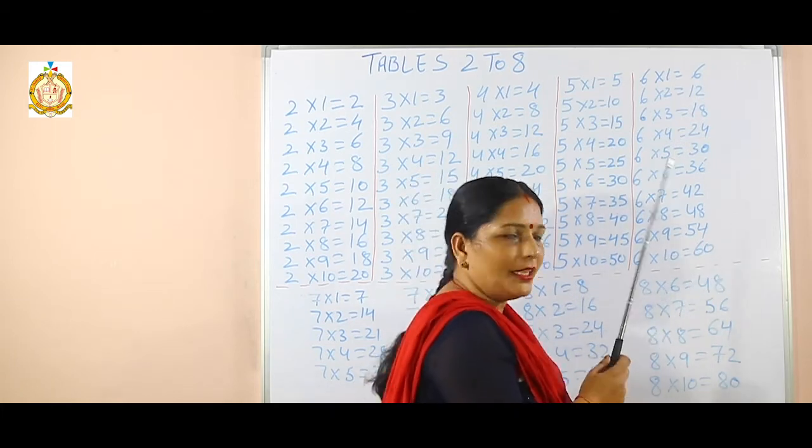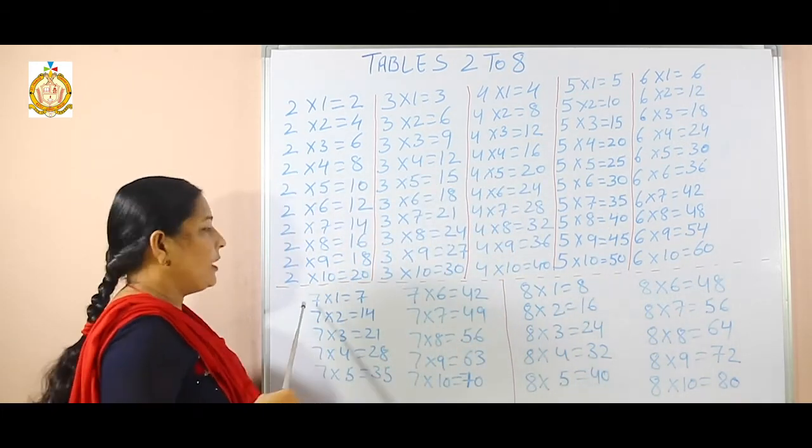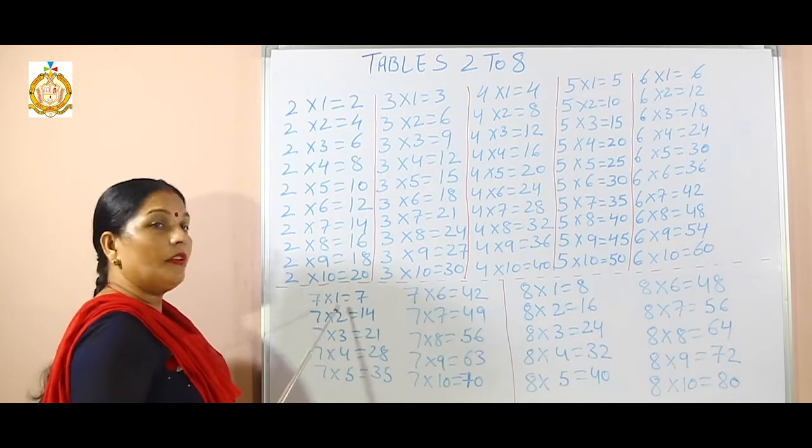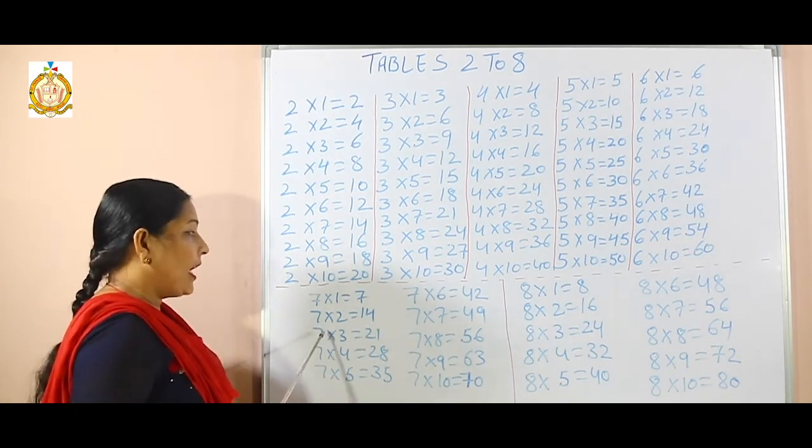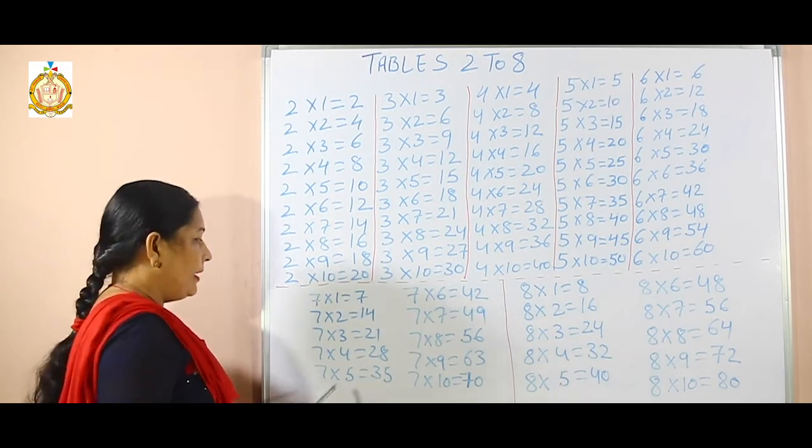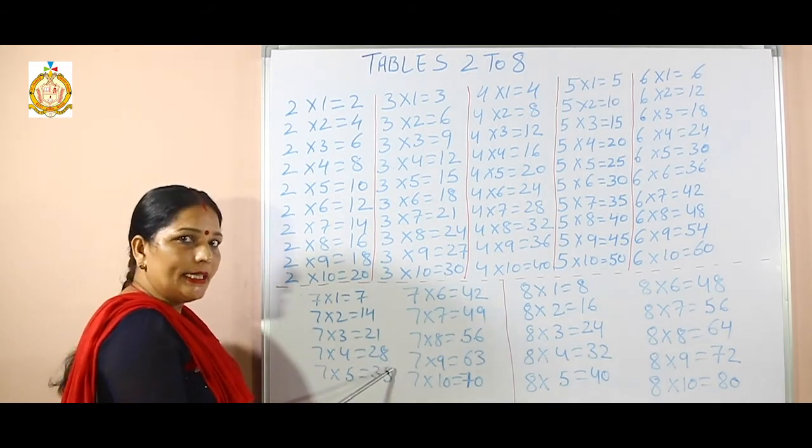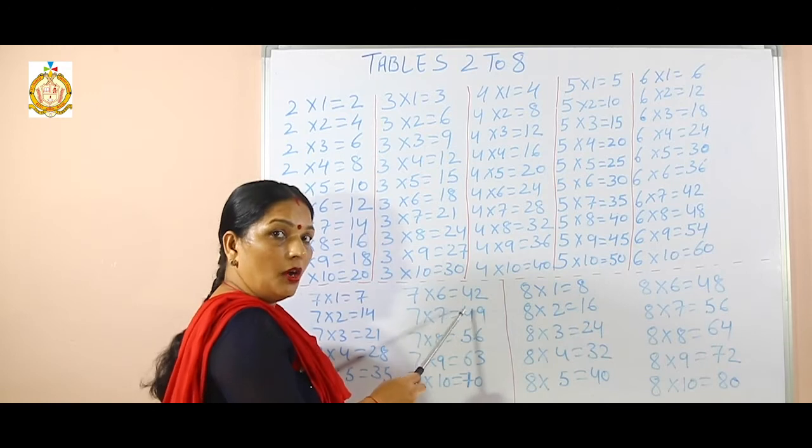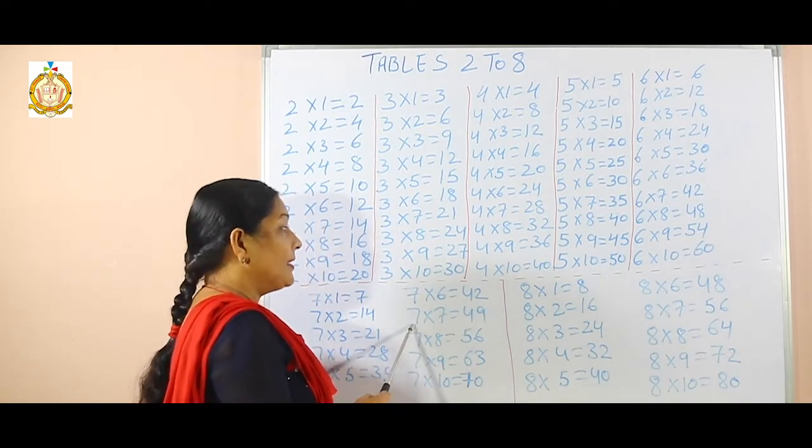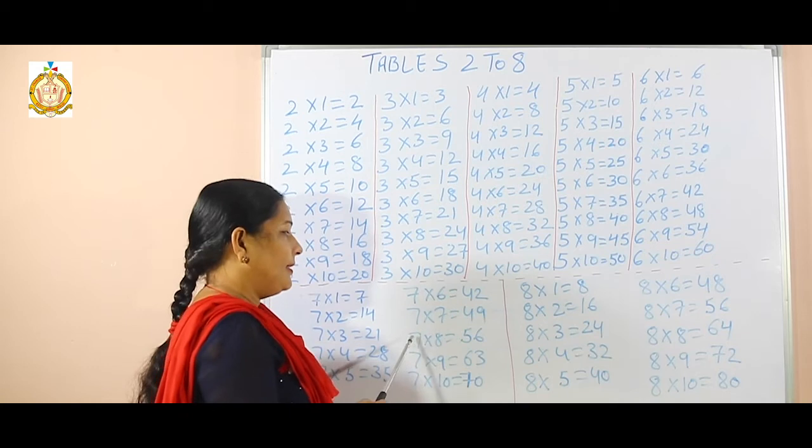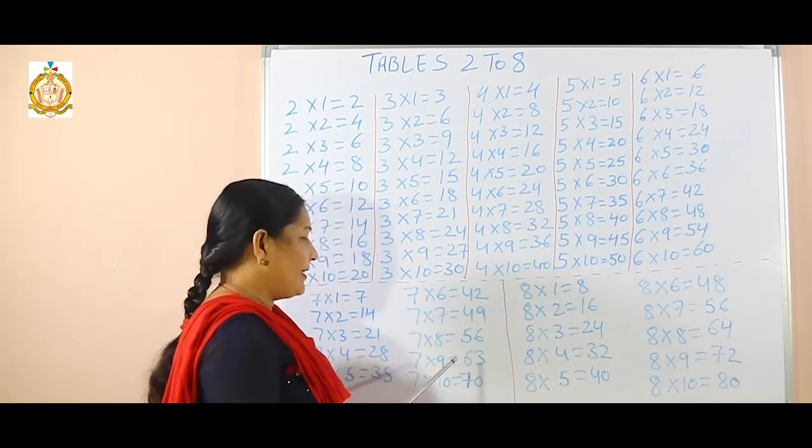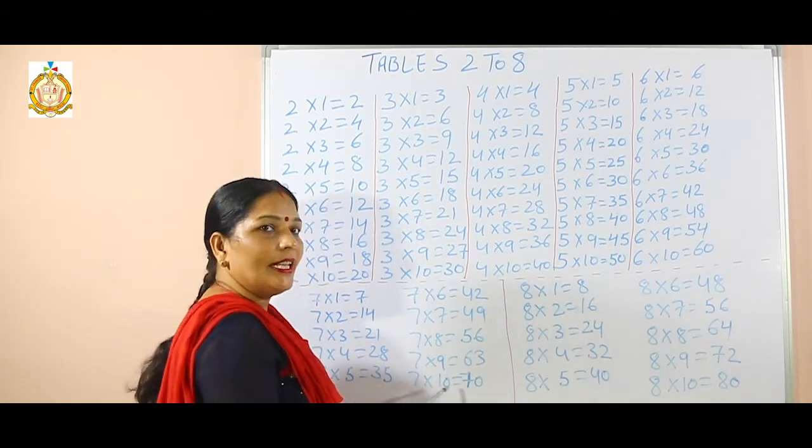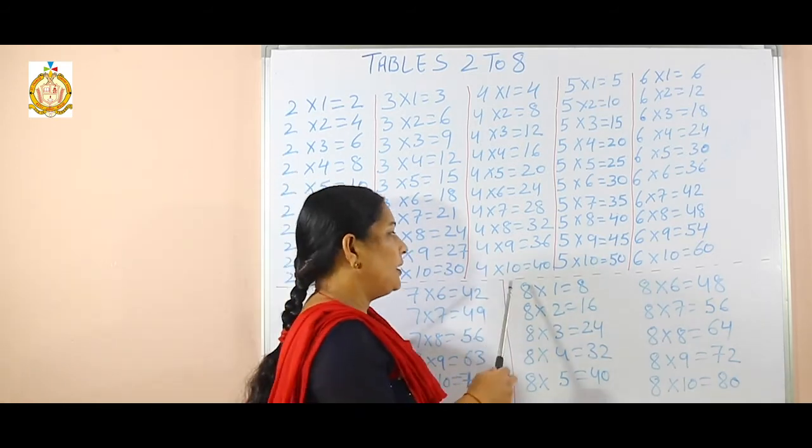Now come on the table of 7. 7 ones are 7, 7 twos are 14, 7 threes are 21, 7 fours are 28, 7 fives are 35, 7 sixes are 42, 7 sevens are 49, 7 eights are 56, 7 nines are 63, and 7 tens are 70.